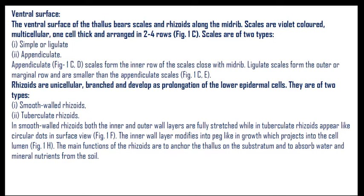The ventral surface of the thallus bears scales and rhizoids along the midrib. Scales are violet-colored, multicellular, one cell thick, and arranged in two to four rows. There are two types: simple scales, also called ligulate scales, and appendiculate scales. Appendiculate scales form the inner row close to the midrib; ligulate scales form the outer marginal row and are smaller. Rhizoids are unicellular, branched, and develop as prolongations of lower epidermal cells. They are of two types: smooth-walled and tuberculate rhizoids.